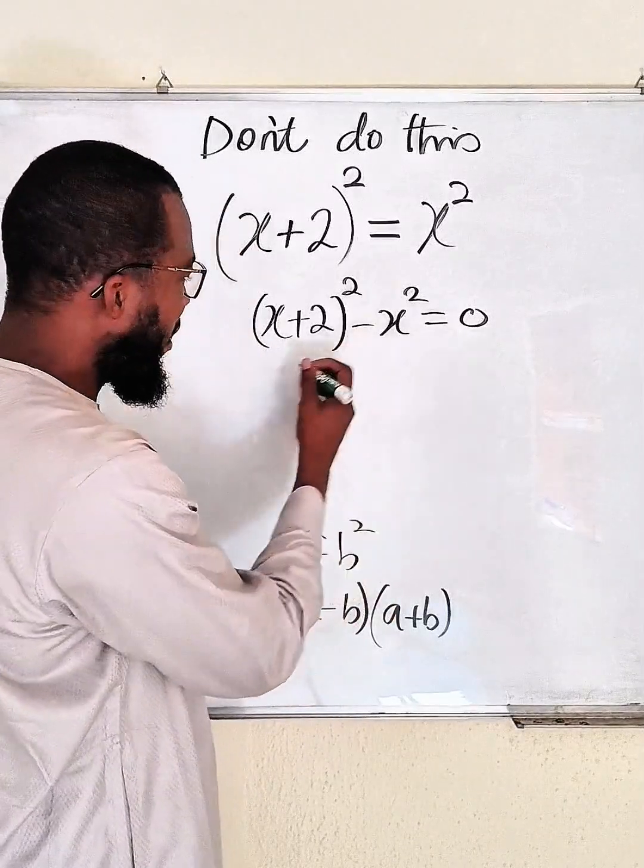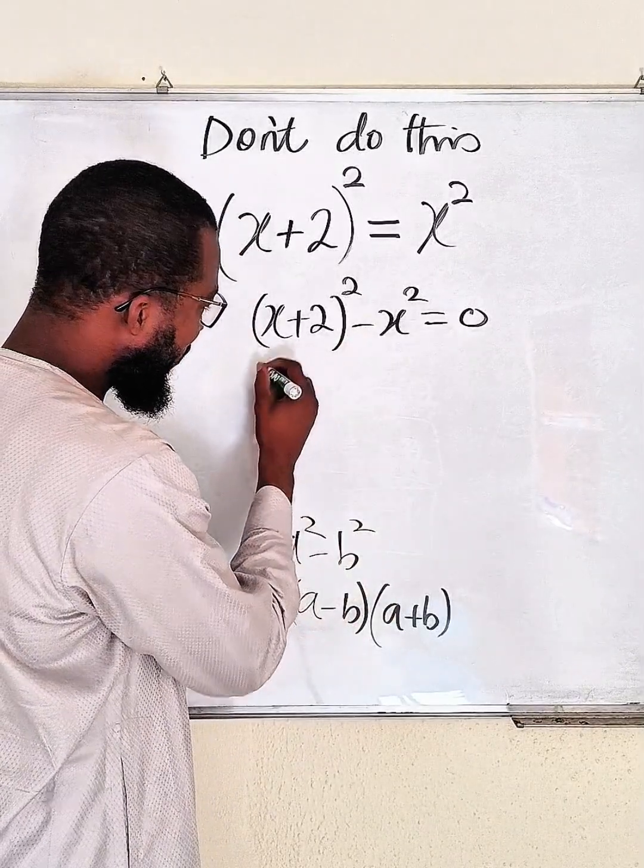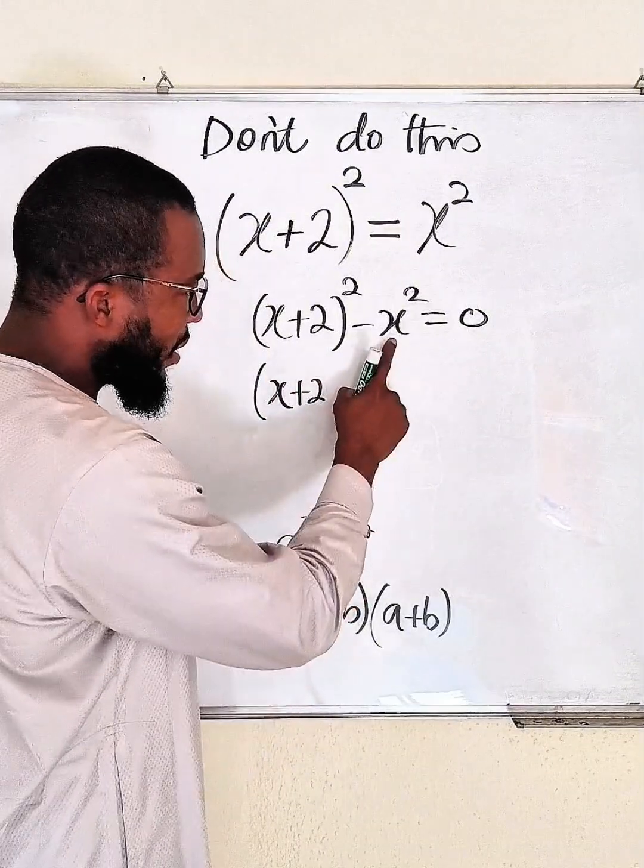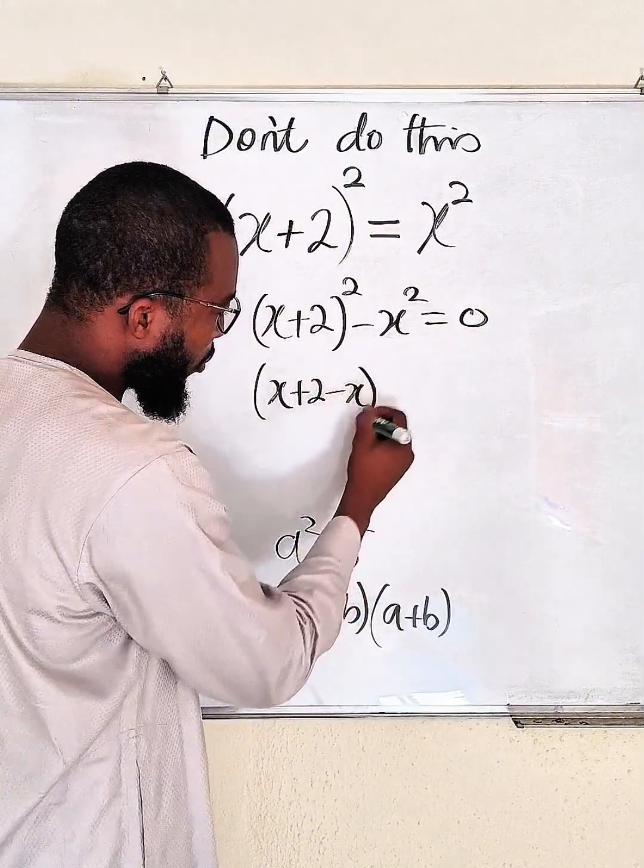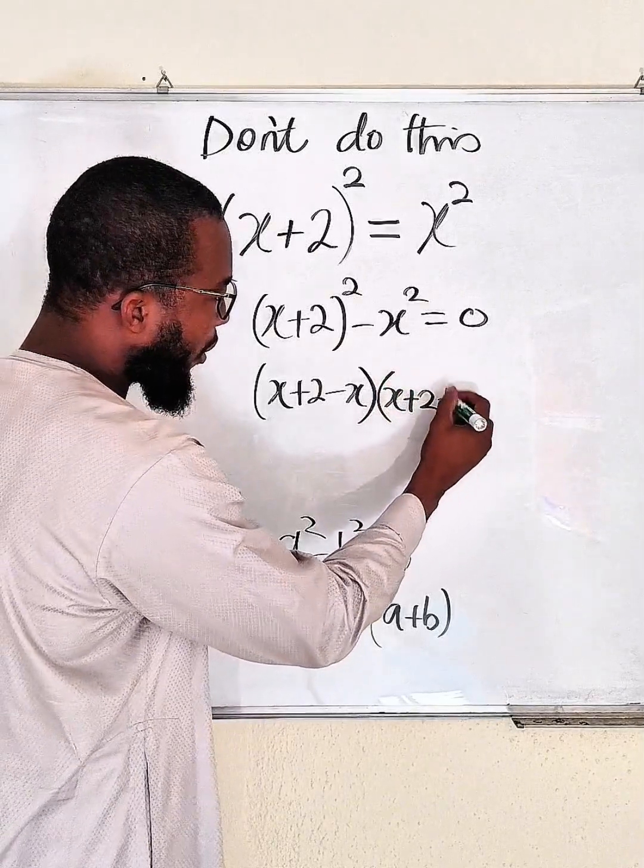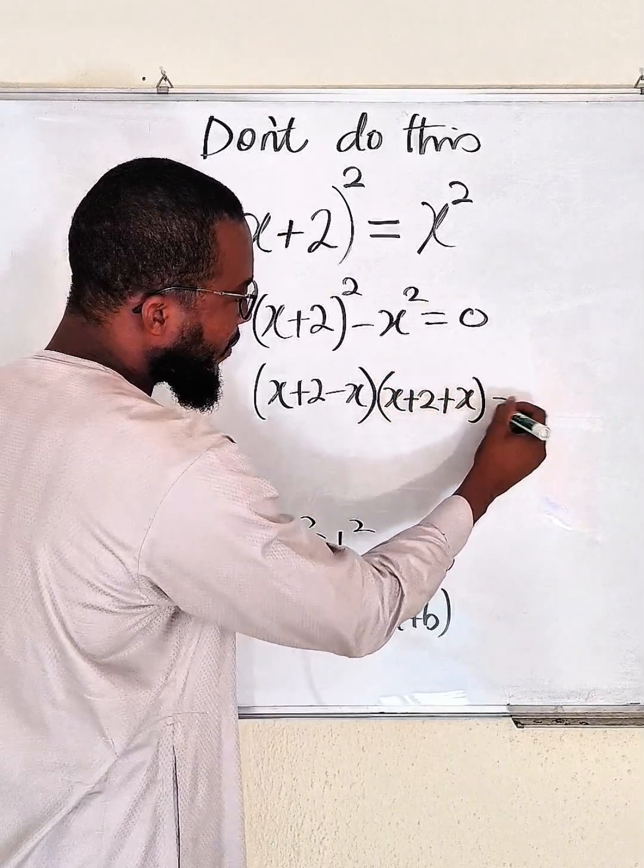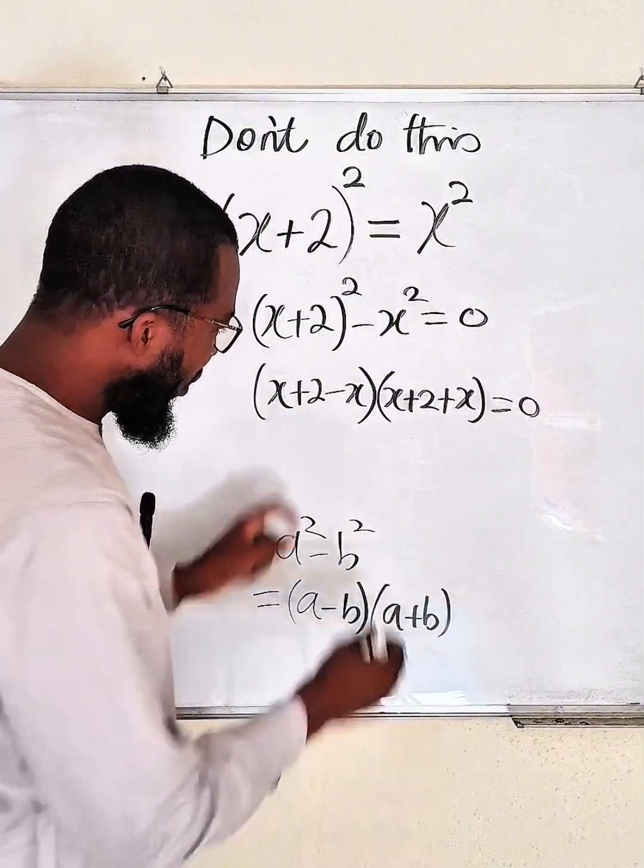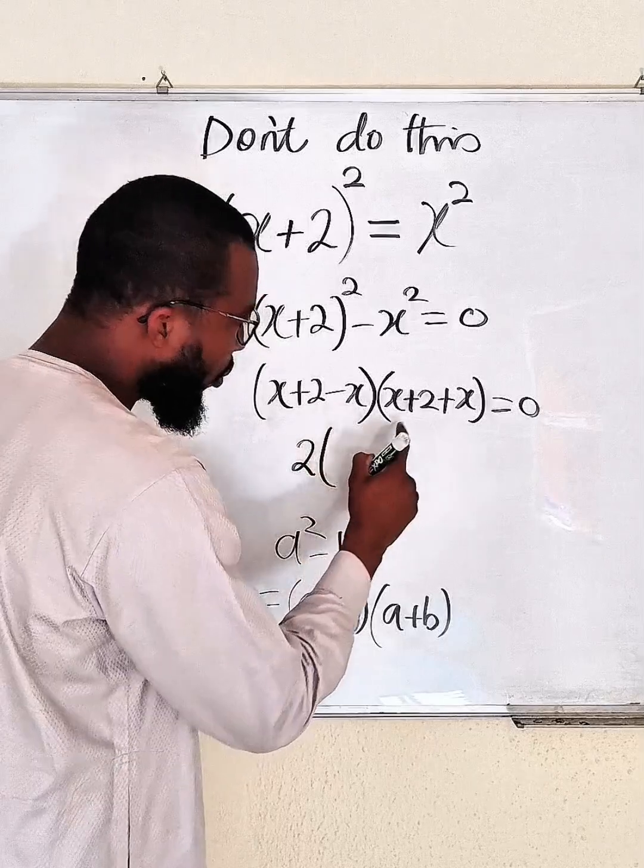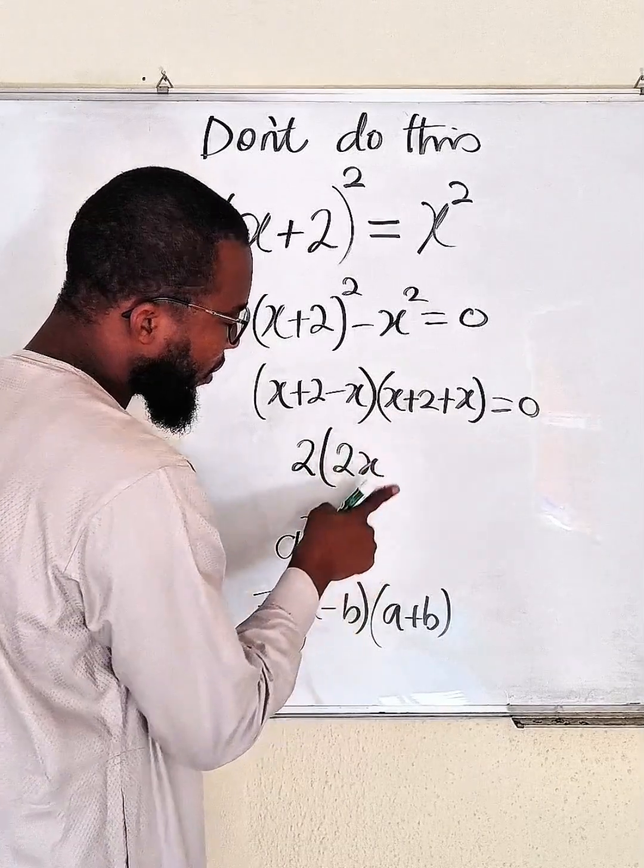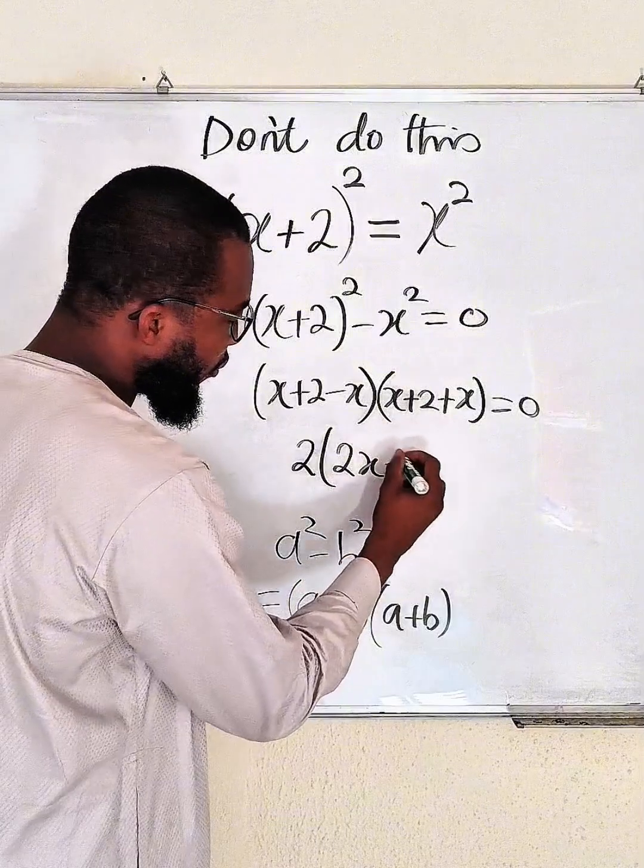So we say that this is (x+2) - x multiplied by (x+2) + x, and this is equal to 0. x minus x is 0, so we only have 2 here, multiplied by x + x is 2x. Then we have plus 2.